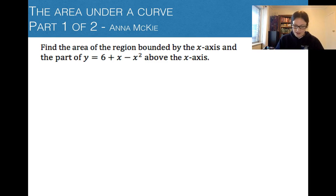Above the x-axis we have 6 + x - x² and we're going to find when that equals 0 because that will be the x-intercepts. You need to be able to factorize. I like to put it in descending order and get rid of that leading negative.